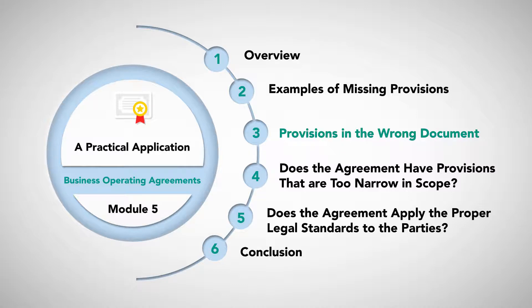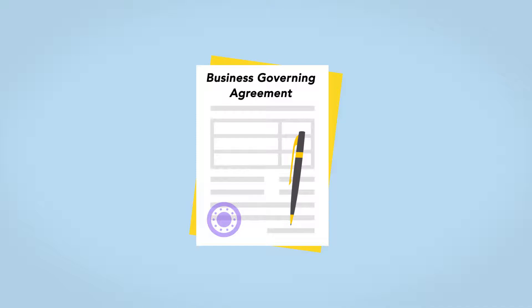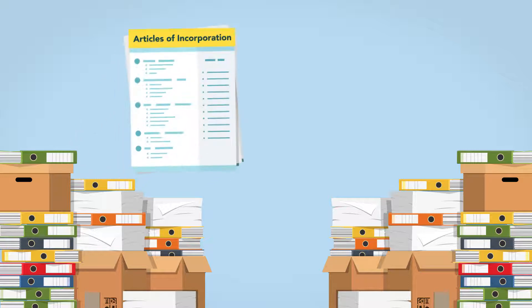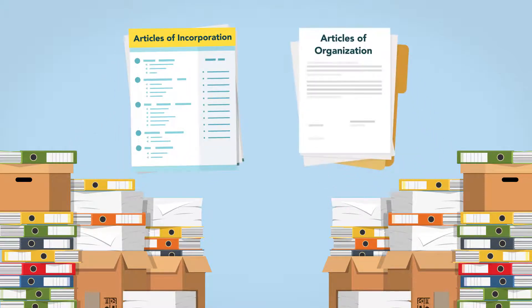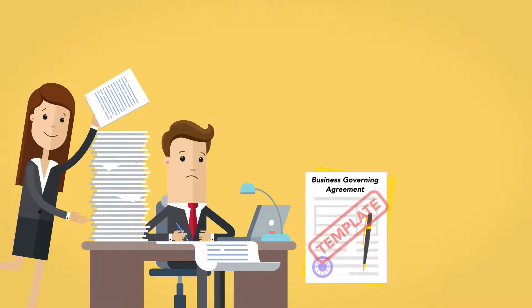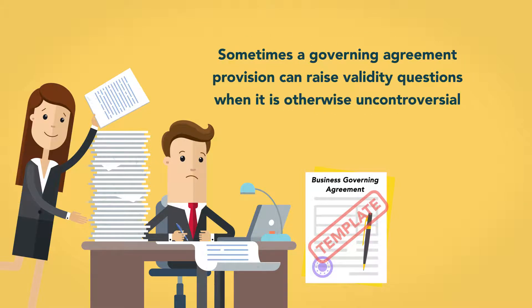Provisions in the wrong document. We have focused on governing agreements in this course, but it's important to know that other documents can also bear on the question of how to structure the company. Articles of incorporation for corporations and articles of organization for limited liability companies are examples of instruments that can or are required to contain terms that might be out of place in a generic governing agreement. Because the makers of universal governing law templates often do not have the time or resources to check these forms against the requirements of each state, sometimes a governing agreement provision can raise validity questions when it's otherwise uncontroversial.